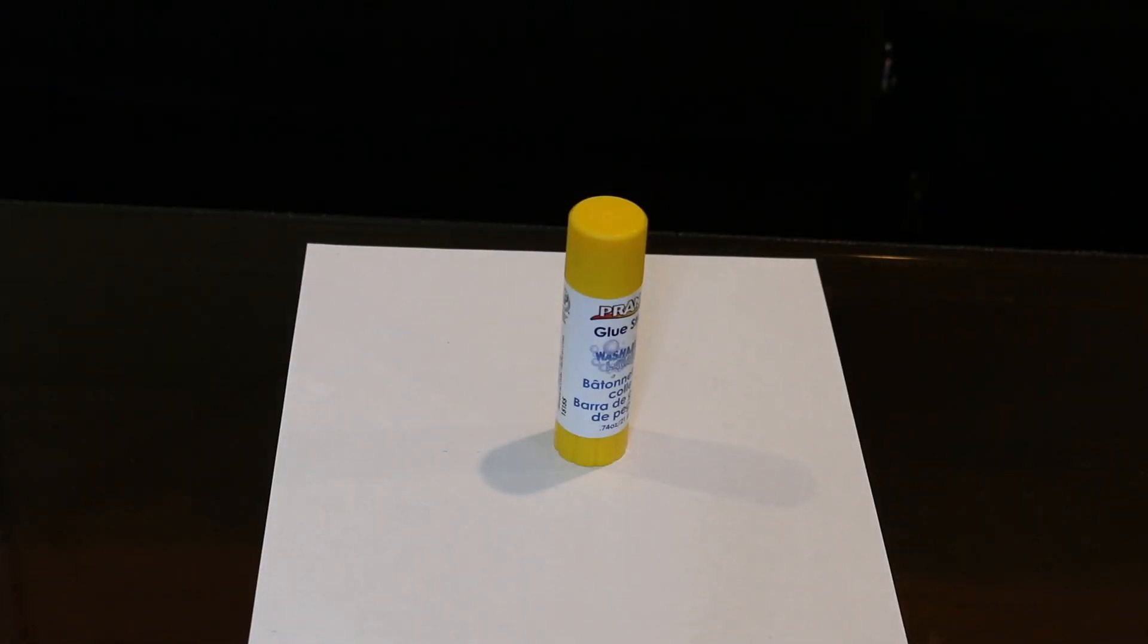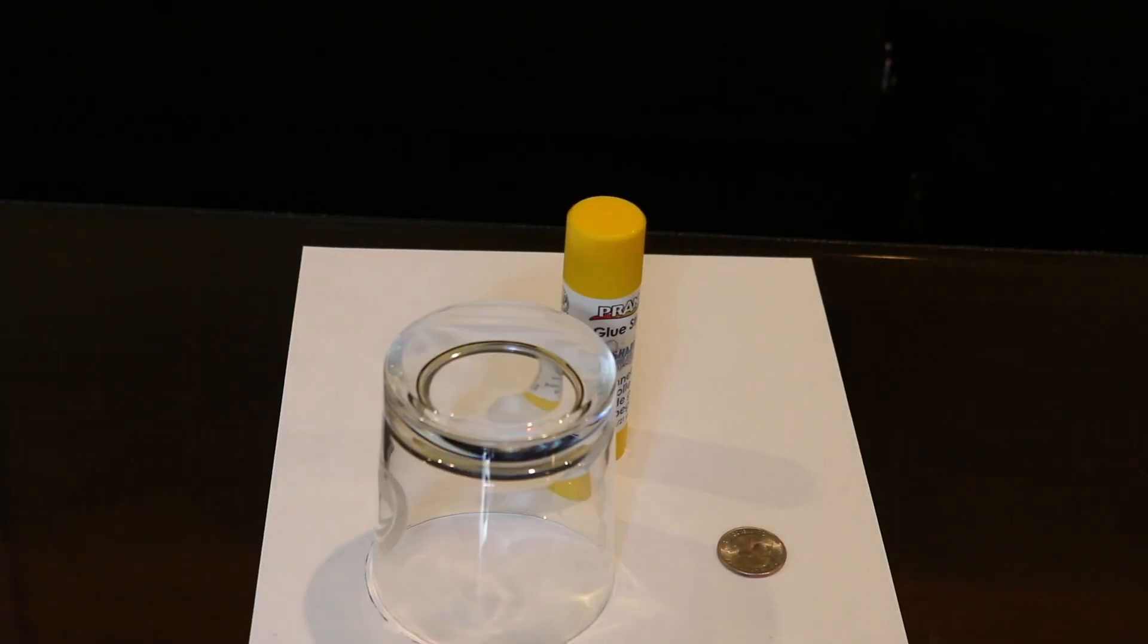Alright guys, you're going to learn that right now. What you're going to need is glue, paper, a coin, and a clear glass—whether that's a wine glass or anything that you can see through. When I say this is one of the easiest tricks, I really mean it.